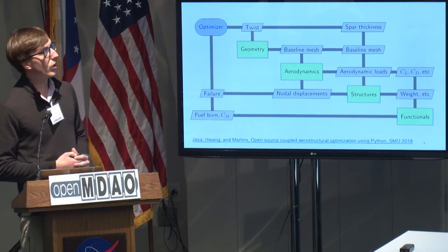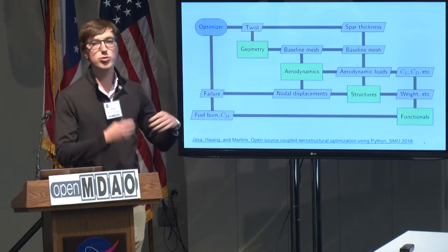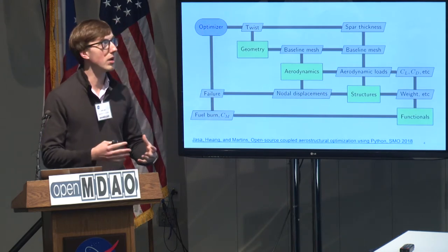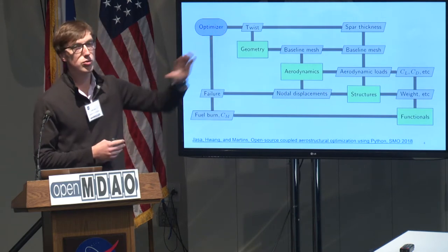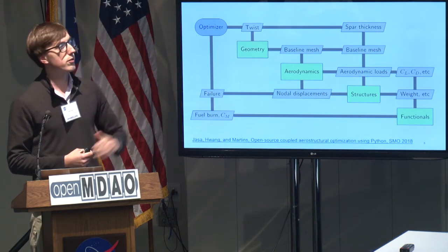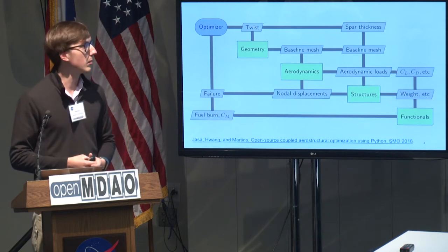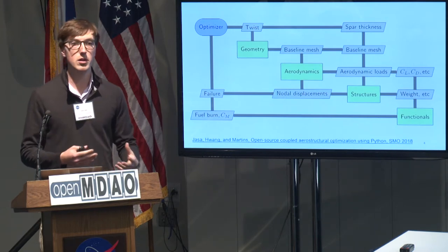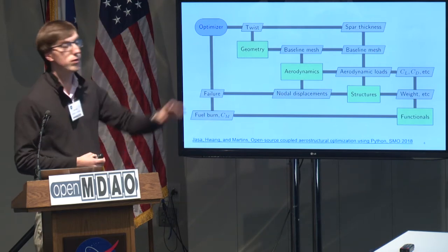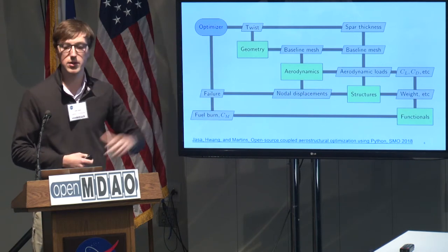If we show the XDSM for what OpenAerostruct is actually doing, we have the optimizer at the top level, a geometry object creating the VLM mesh for aerodynamics and the structural mesh for a simple FEA model. We have coupled aerodynamic and structural disciplines with a solver convergence loop, and then a functional statement evaluating coefficient of lift, drag, CM, fuel burn, and any other functionals you want. It's very flexible — you can add environmental impact analysis, for example.